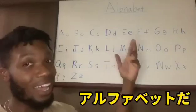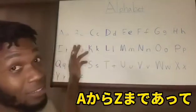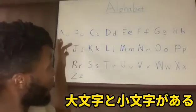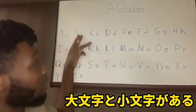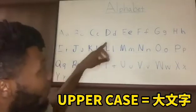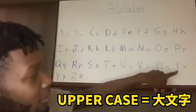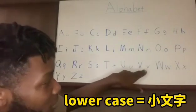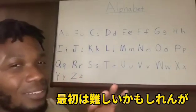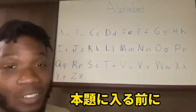This right here behind me — y'all should already know — if you're trying to learn English, this is the alphabet. I'm gonna go from A all the way to Z. We got the uppercase and then we got the lowercase letters. The big ones are uppercase, and the little letters right next to them are lowercase.